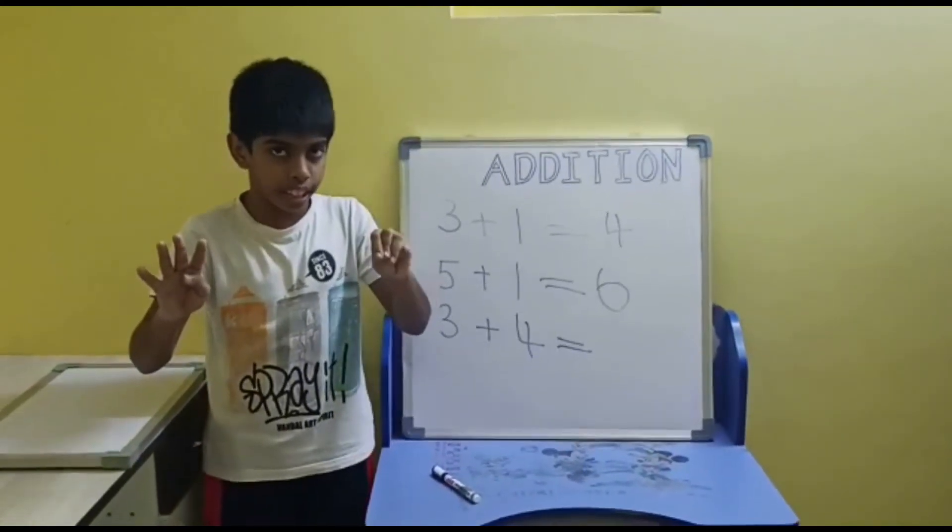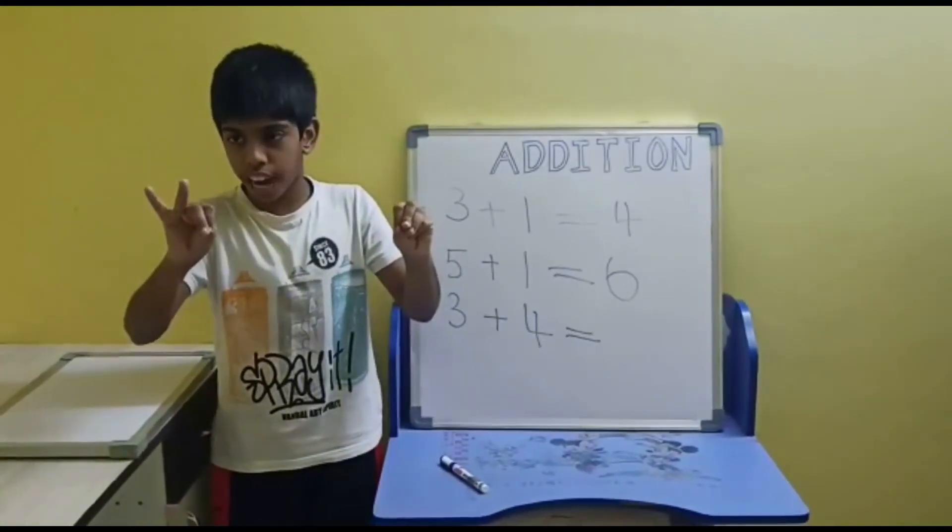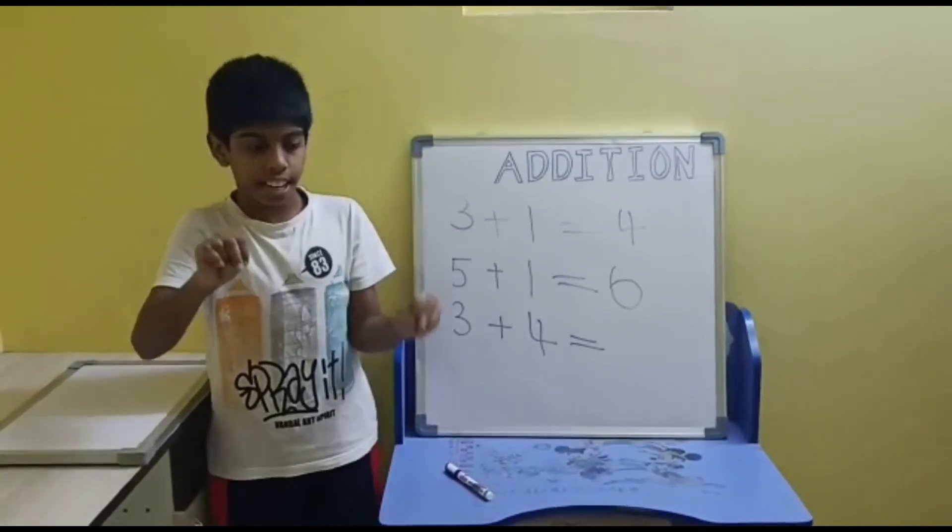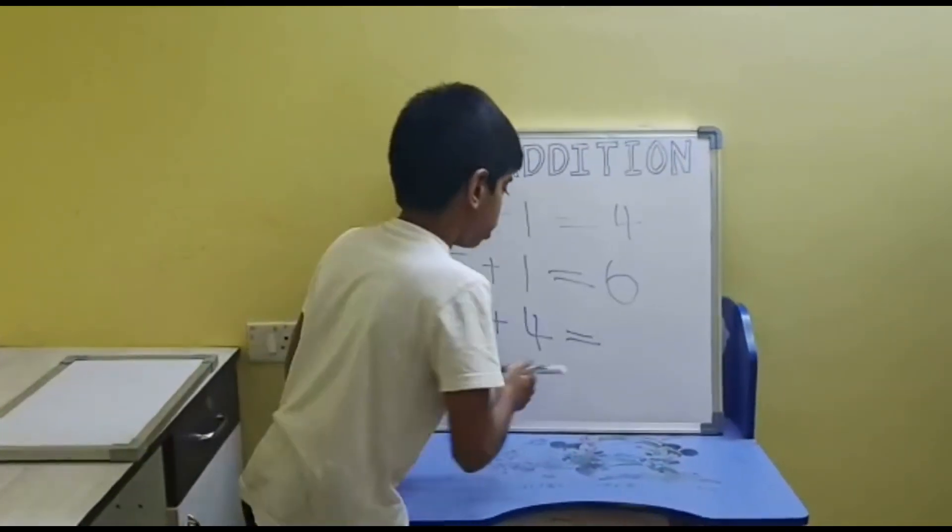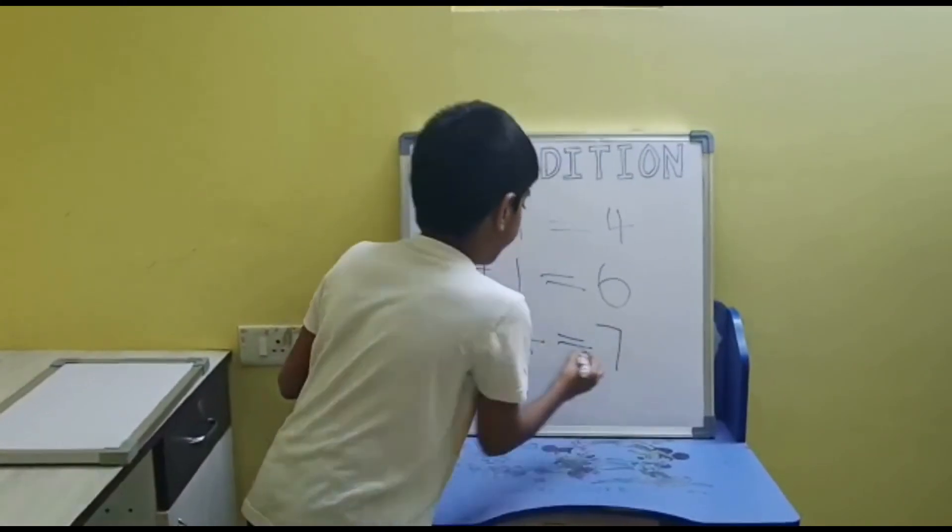One, two, three. Four, five, six, seven. Seven fingers. So seven is the answer.